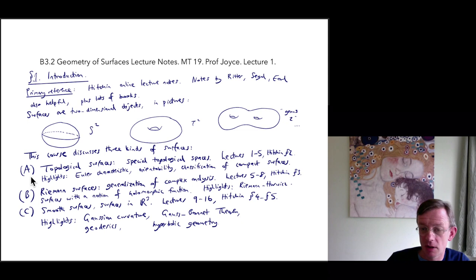And they'll be the subject of lectures five through to eight and the Hitchin Notes section three. Some highlights of the Riemann surfaces part of the course is the Riemann-Hurwitz formula. The third kind of surface we're going to talk about are smooth surfaces, which may or may not be embedded in R³ three-dimensional space as the surface of some object.